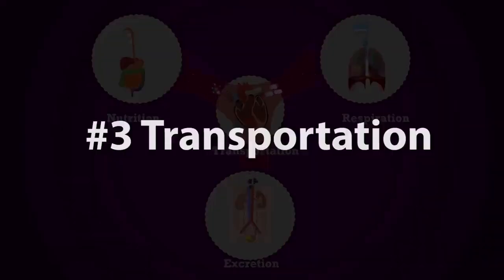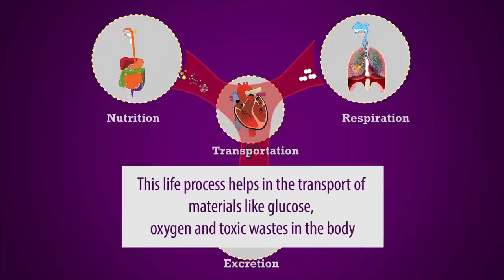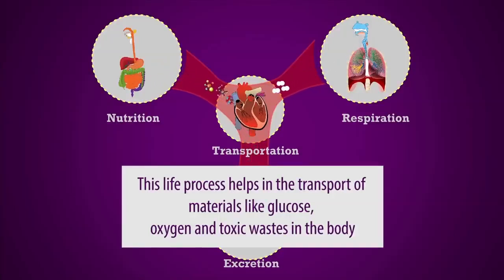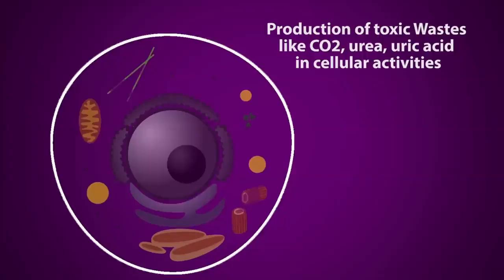The third life process is transportation. This process helps in the transport of useful materials like glucose and oxygen, and toxic materials like carbon dioxide and urea, etc. Cells get oxygen and nutrients by these three life processes. Cells use these materials for production of energy and to make new complex molecules. In these cellular reactions, toxic materials like carbon dioxide and urea are produced.